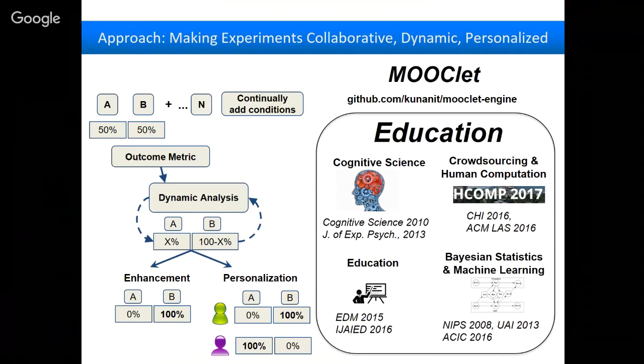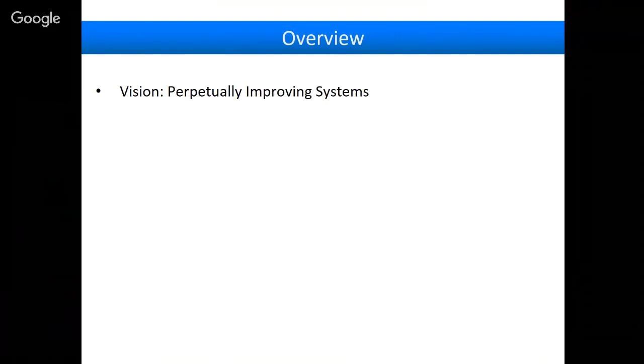So to give me an overview, I started on this vision of how do we kind of move towards perpetually improved systems. But I want these perpetually improved not just through AI, but actually by bringing together the wisdom of instructors, with scientists, and with machine learning researchers. And so my approach is to really rethink experiments to be collaborative, dynamic, and personalized.